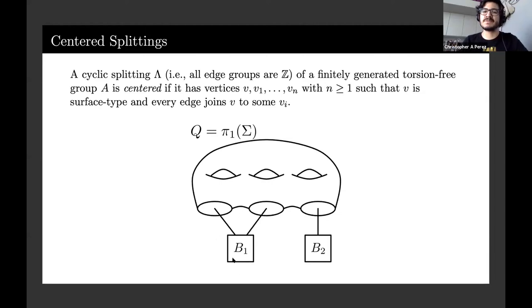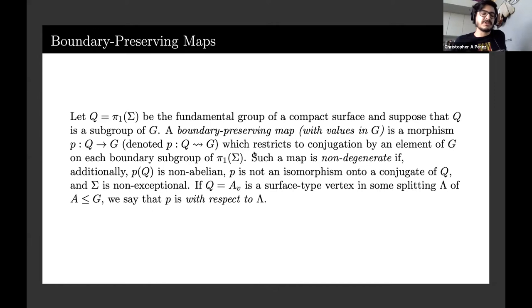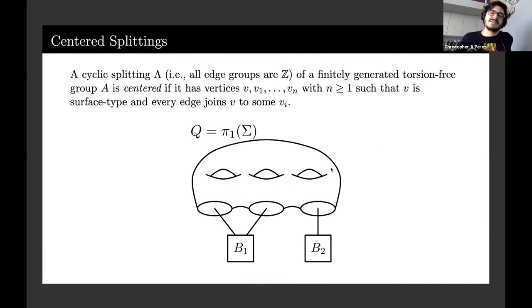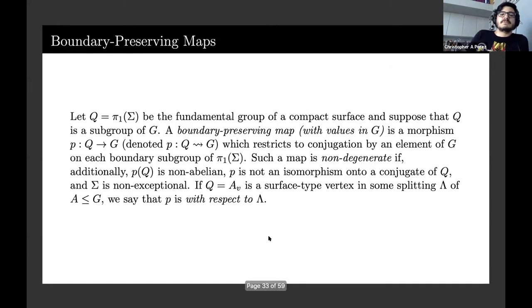In order to define what a tower is, I need to define what a centered splitting is. A centered splitting has a single surface type vertex and all the edges are Z and they all join that surface type vertex to some other vertex. So all the edges come out of V. The reason why surface type vertices are interesting is that we can often find ways to retract this entire thing down onto the lower subgroups.